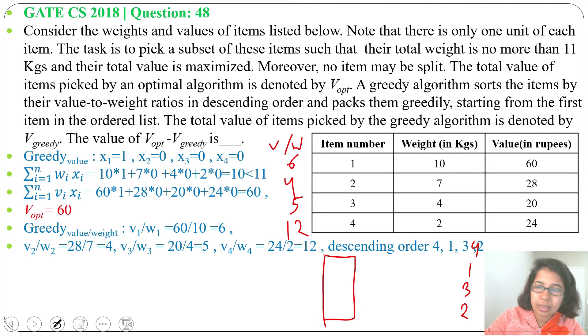Now we will fill the knapsack. First we will choose item 4, its value per weight is 12. Item 4 weight is 2 kg. After 2 kg from 11, 9 kg left. Next we will pick item 1.